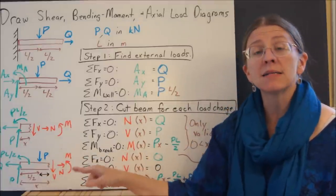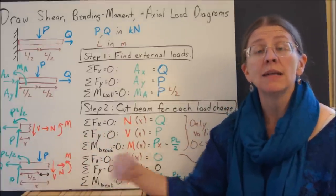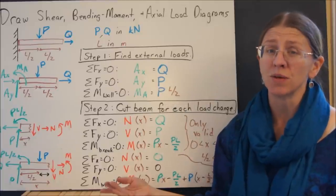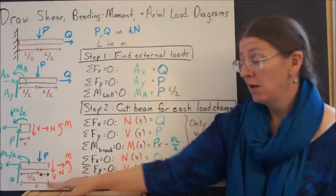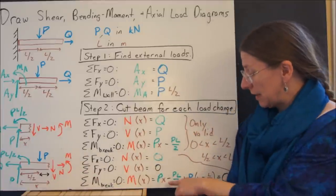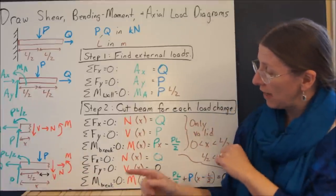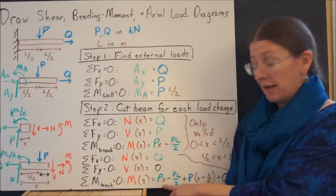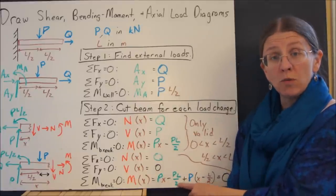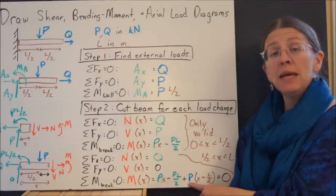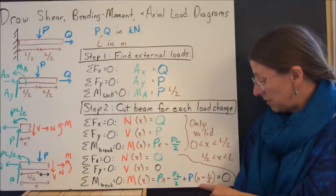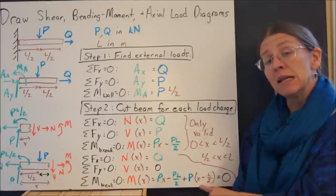This free body diagram is valid for every x between L over 2 and L. I'm going to solve equations of equilibrium to find out what my internal loads are for this point. Be a little bit careful, x still starts at the left-hand end, it's our coordinate, it has to start at the origin. So the distance along this beam is x, which means that when you're actually summing this moment, you've got P of x.